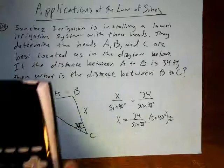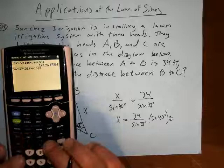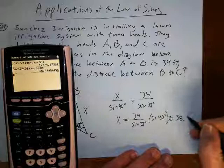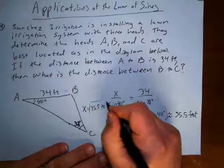Like that. And that should give me the length from B to C. And this says 35.5 feet. So this is 34 feet. This is 35.5 feet.